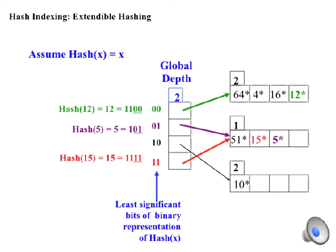The fact that we distinguish keys by the two least significant bits is indicated by the global depth of two, as shown at the top of the hash table. You can verify that the decimal 12 would hash to location 0, 0, and therefore the first or top bin,